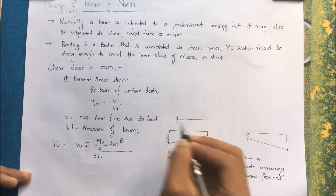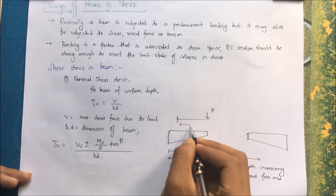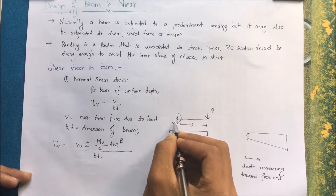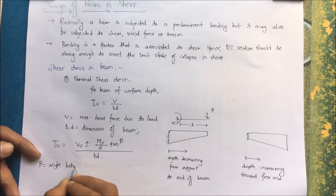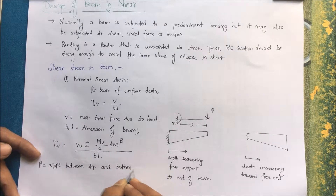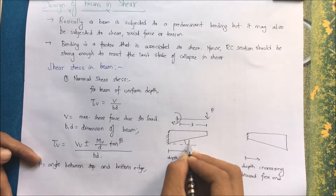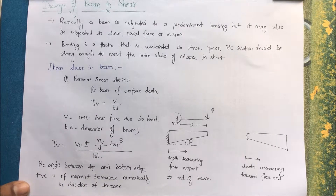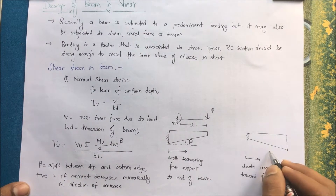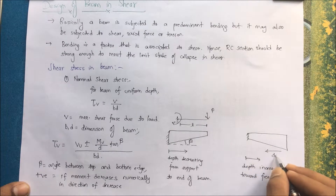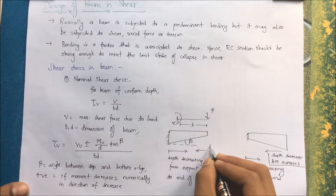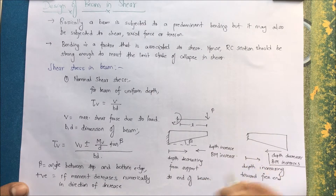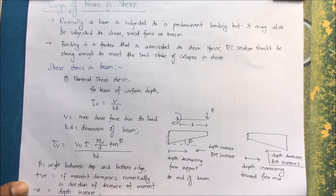This can be considered as a cantilever case. When a load acts on the free end, a moment is induced. Here beta is the angle between the top and bottom of the beam. Mu is the moment at the support or at any section. When depth decreases towards the support, moment is maximum at the support for a cantilever. The sign is negative if depth increases and bending moment increases numerically.